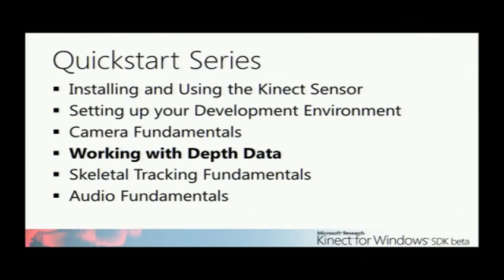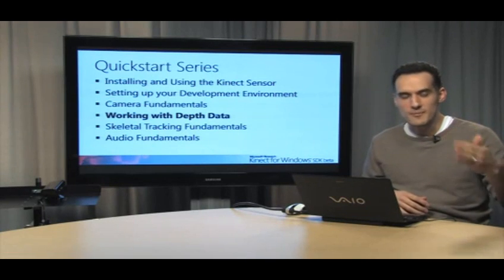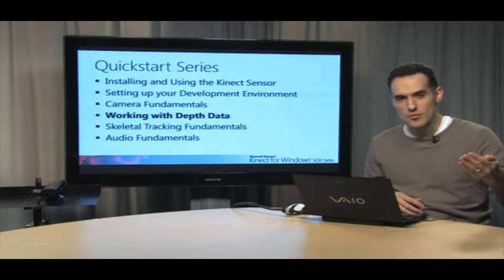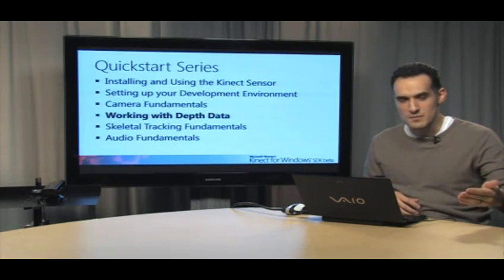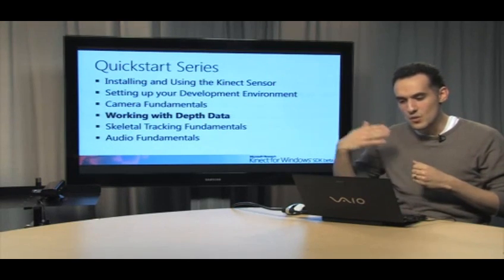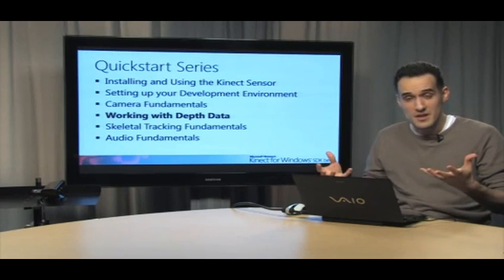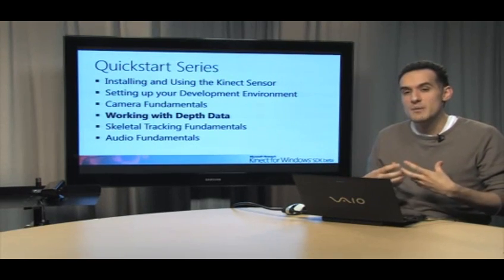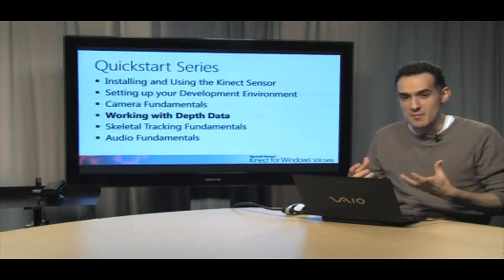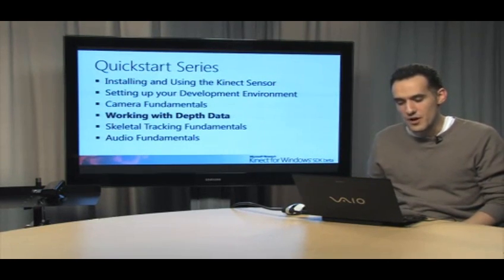In our last video we talked about the camera fundamentals. The things you should have taken away from that is we have a runtime object. We tell it what kind of image to use, use color, use depth. We sign up for an event, whether it's a depth frame ready or video frame ready. We open the streams. We get in that event that's going to fire around 30 frames per second. We get the raw data for the image and we need to build that image. So in this one we're going to talk about how we build a depth image and the data that's actually coming back from the depth frame.